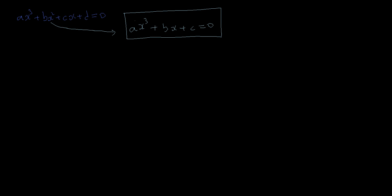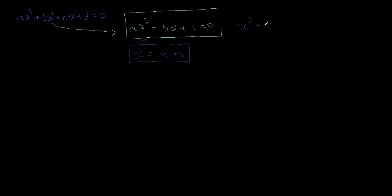The first thing to do is to write x as u + v — we assume that x is a sum u + v and substitute into the equation. Instead of keeping general coefficients a, b, and c, I'll substitute specific values of 1 to illustrate the general method, so the equation we are trying to solve is x³ + x + 1 = 0.